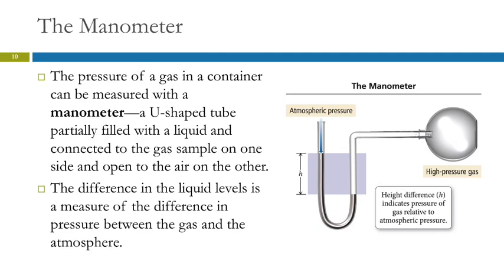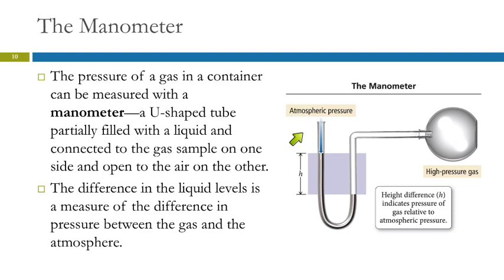When both ends are open, mercury equalizes — it goes to the bottom and settles level. But here, one side is lower because there is higher pressure in the container. It's like someone blowing on one end of the tube — it pushes mercury down on that side, and it rises on the other. The reason it doesn't shoot all the way out is because atmospheric pressure is pushing down on the open side.